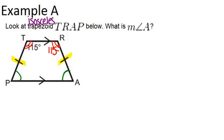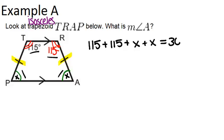Another thing I know is that the four interior angles for any quadrilateral will add up to 360 degrees. So that means these four angles must add up to 360 degrees. So if I call angle A x, then angle P will also have to be x. And I know that when I add all of these up, 115 plus 115 plus x plus x, that has to equal 360 degrees.